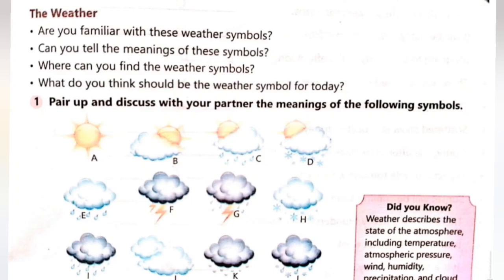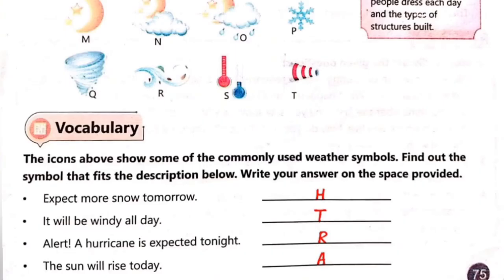Next is E — E ka jo symbol hai wo drizzle ko expect kar raha hai, expect drizzle tomorrow morning. Next hamare paas F mein jo hai symbol — yeh heavy thunderstorm tomorrow show kar raha hai. G mein aap dekh rahe hain ke rain drops bhi nazar aa rahe hain, to thunderstorm and rain mix ko yeh show kar raha hai. H ke icon ko dekhen — it's expected more snow tomorrow. I shows heavy rain, heavy showers. J is going to be cloudy in the afternoon — it shows cloudy weather. K jo hai wo haze ka symbol hai, yani ke dhund ko show kar raha hai.